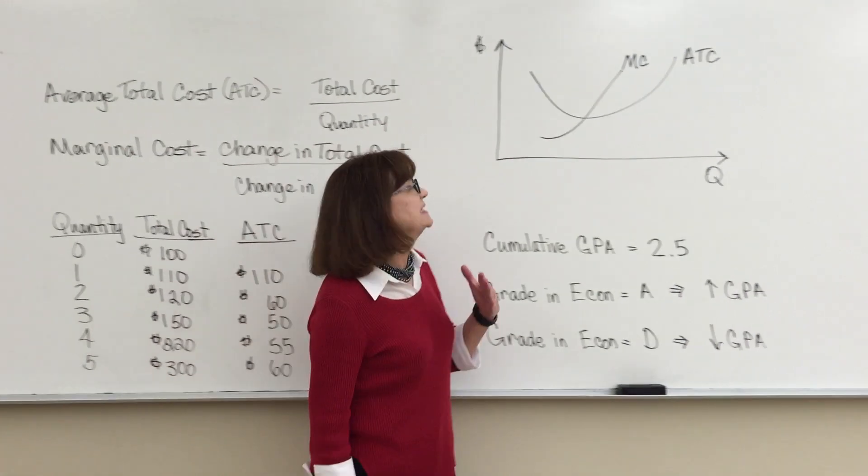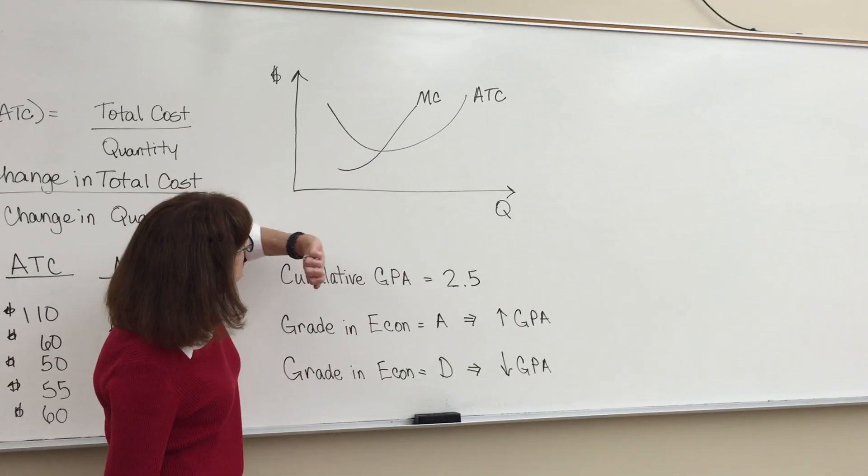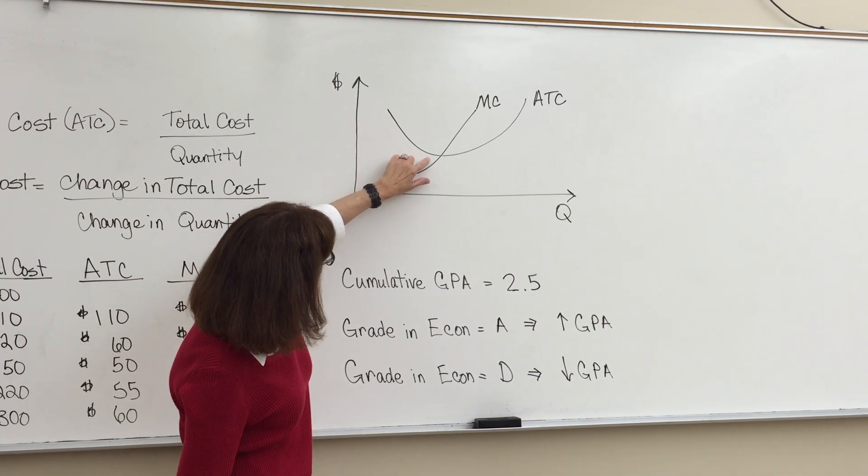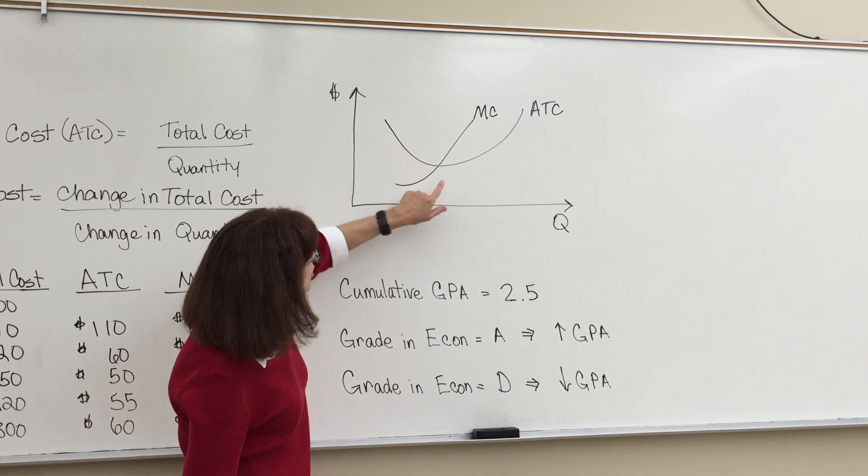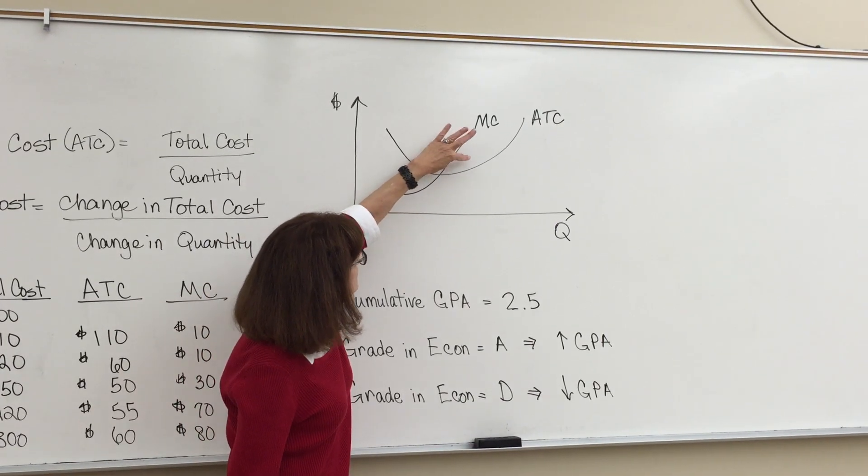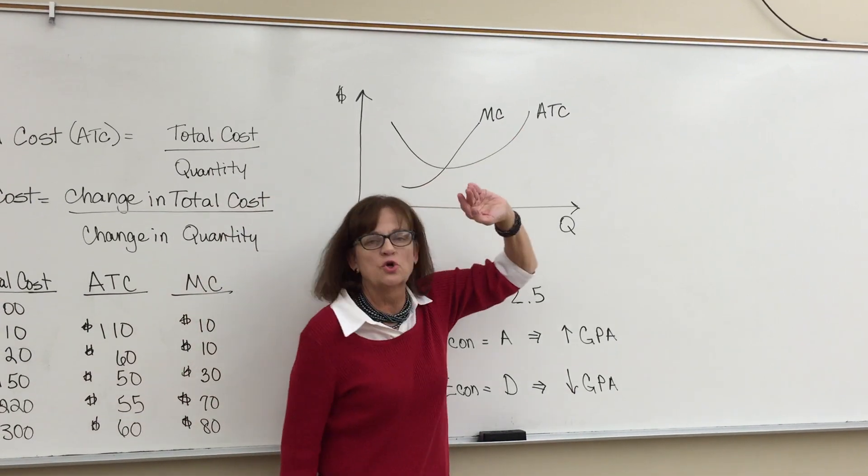If you look at it graphically, as long as your marginal cost is less than your average total cost down here, the average total cost is falling. At some point they're going to be equal and then the marginal cost will be above the average total cost and it will pull the average total cost up.